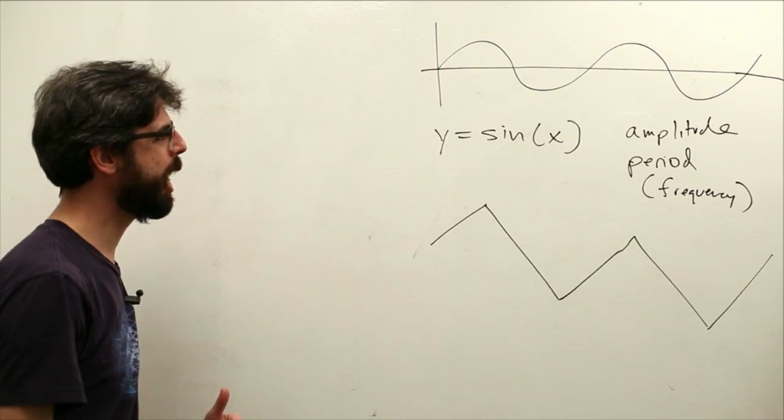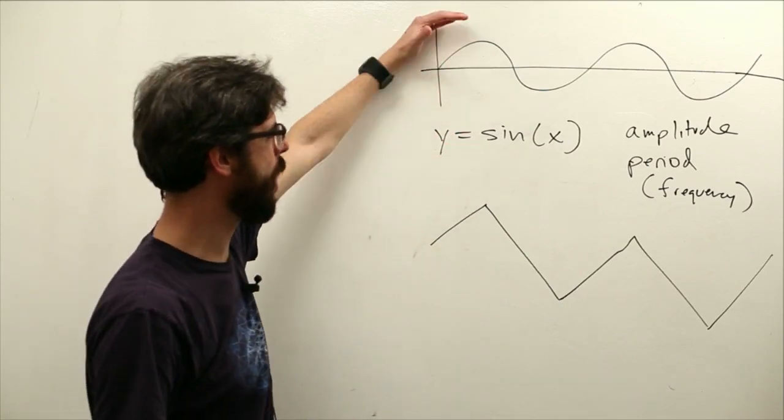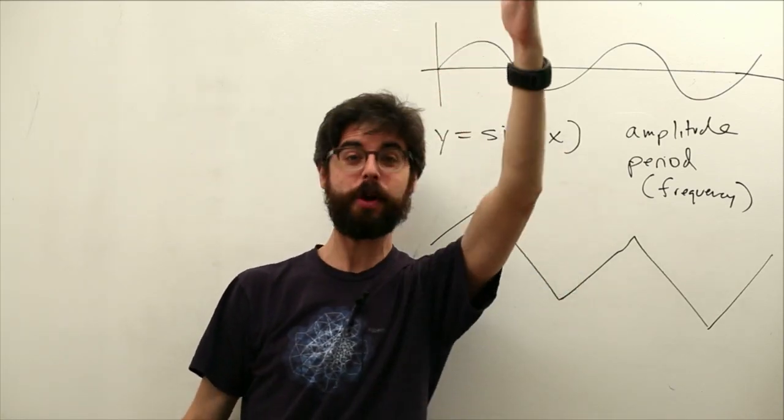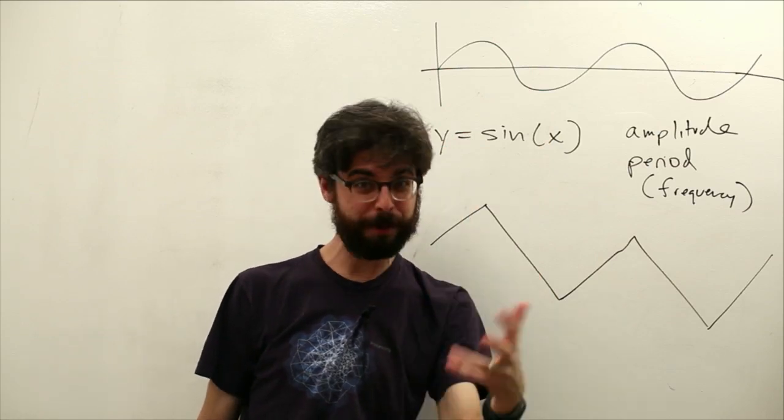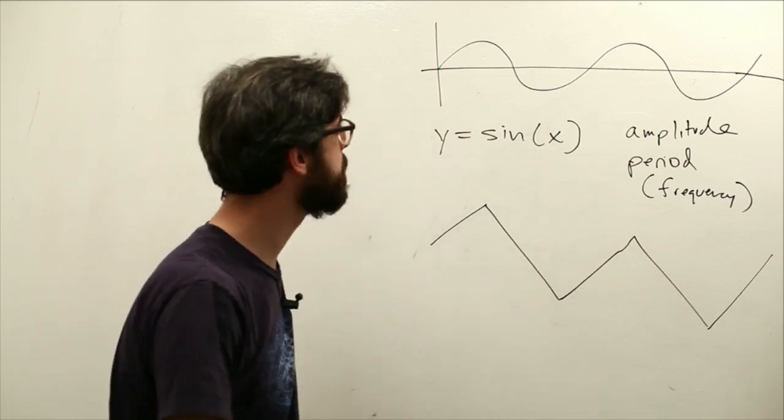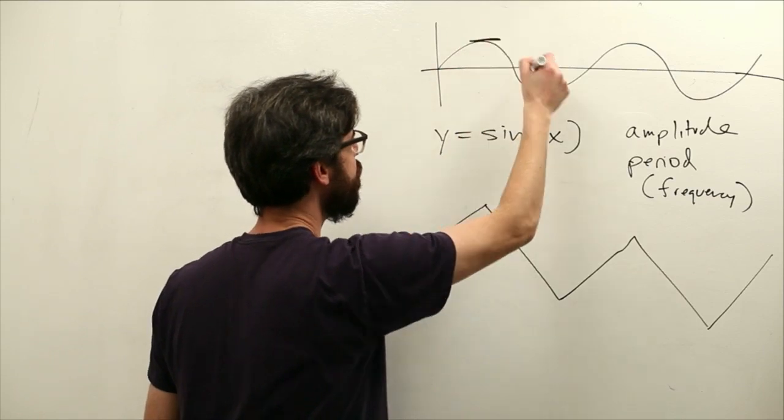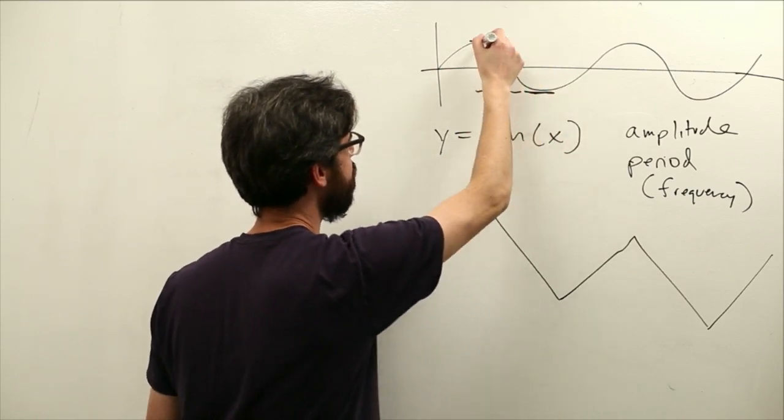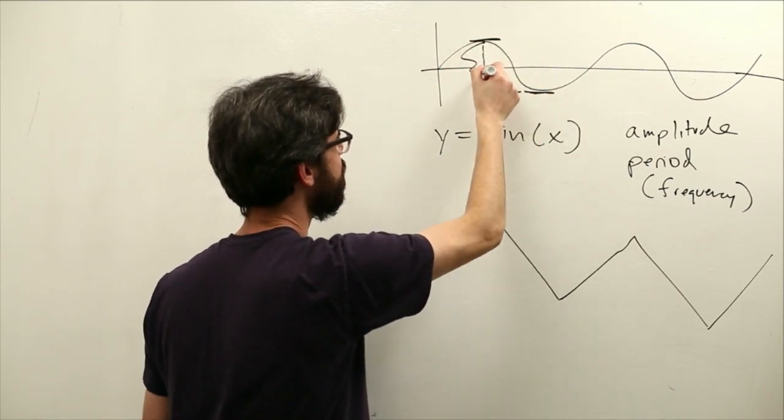So amplitude refers to the height of the wave, the difference between the maximum part of the wave and the minimum part of the wave. You might remember some stuff about this when we looked at Perlin noise actually. Maximum part of the wave to the minimum part of the wave. That is the amplitude.